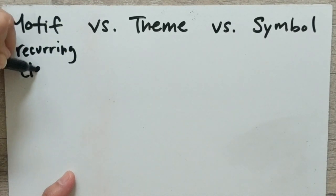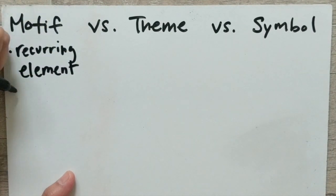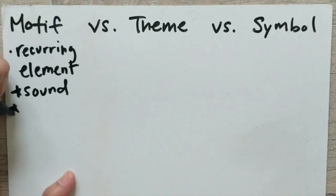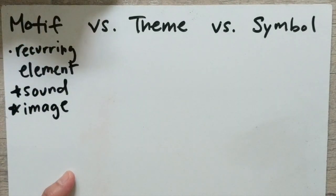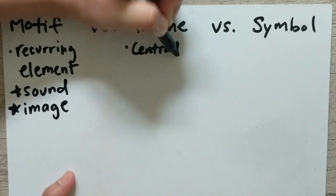a motif is a recurring element in a piece of literature, meaning you see it over and over again throughout the story. It could be a sound, it could be an image, it could be an animal or an object.